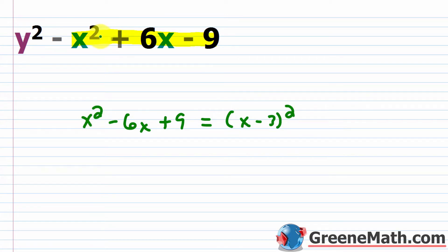So if I could somehow get this to match this, I could factor it to this, and then I would have y squared basically minus the quantity x minus 3 being squared, so I'd have the difference of squares. So that's the idea here.